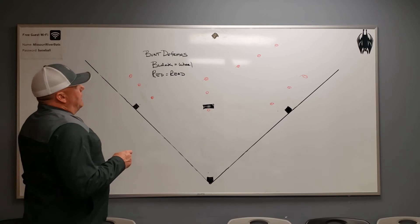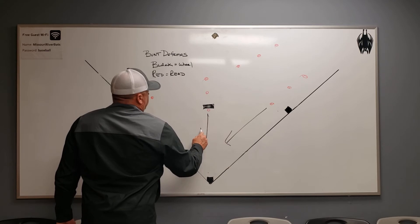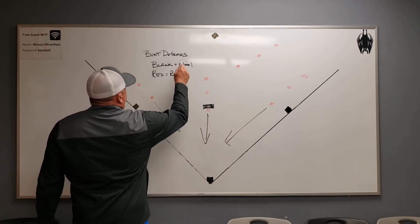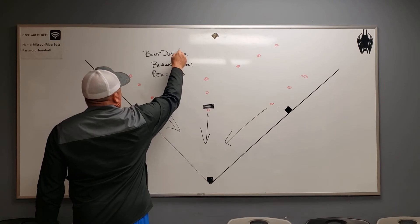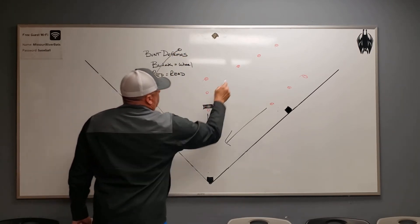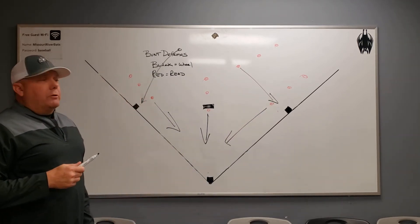So, simple. The first baseman is going to crash. Pitcher is going to crash. Third baseman is going to crash. Shortstop is going to obviously come over to cover. Second baseman is going to come over and cover. We want the out basically at first, usually.